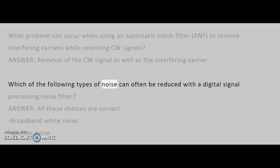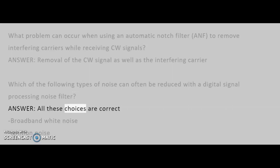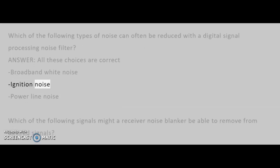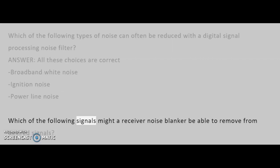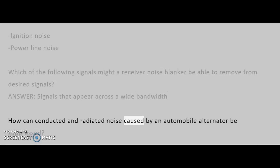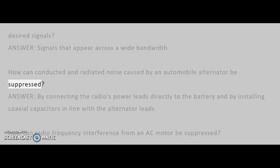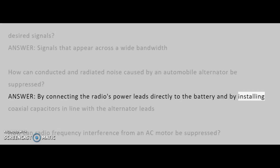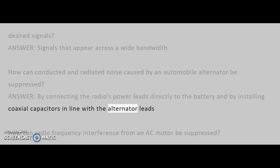Which of the following types of noise can often be reduced with a digital signal processing noise filter? Answer: All these choices are correct — broadband white noise, ignition noise, and power line noise. Which of the following signals might a receiver noise blanker be able to remove from desired signals? Answer: Signals that appear across a wide bandwidth. How can conducted and radiated noise caused by an automobile alternator be suppressed? Answer: By connecting the radio's power leads directly to the battery, and by installing coaxial capacitors in line with the alternator leads.